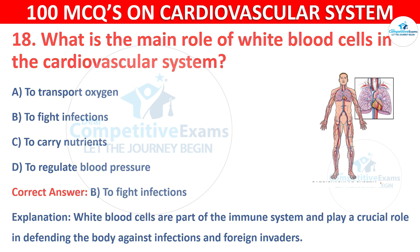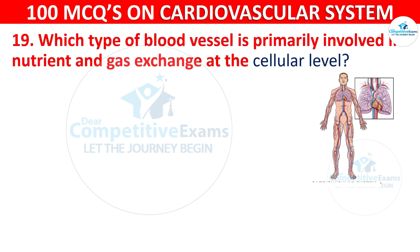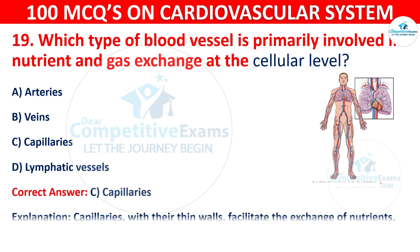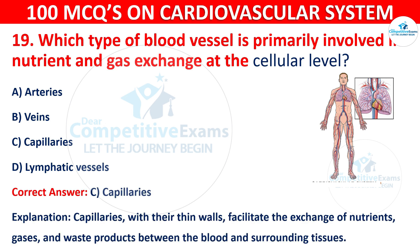Q19. Which type of blood vessel is primarily involved in nutrient and gas exchange at the cellular level? Options are: arteries, veins, capillaries, or lymphatic vessels. The correct answer is C — capillaries. Capillaries, with their thin walls, facilitate the exchange of nutrients, gases, and waste products between the blood and surrounding tissues.